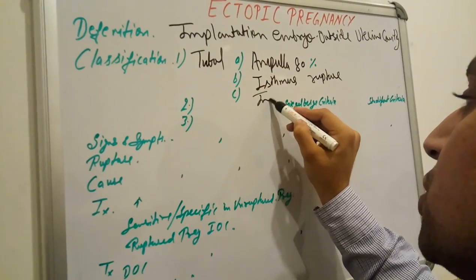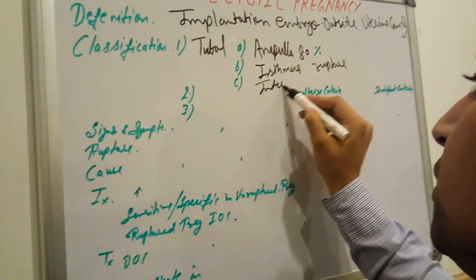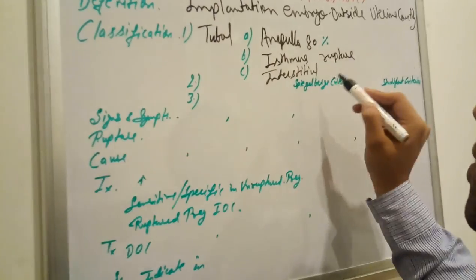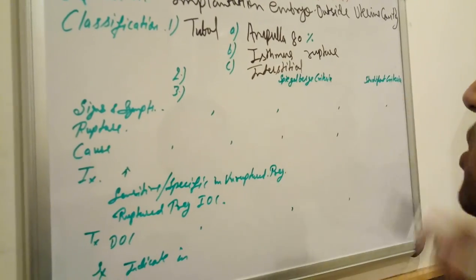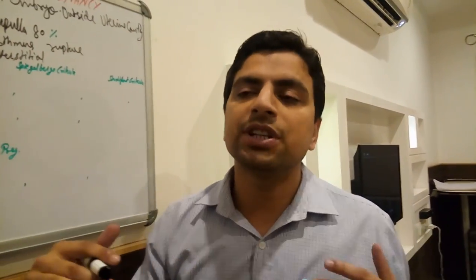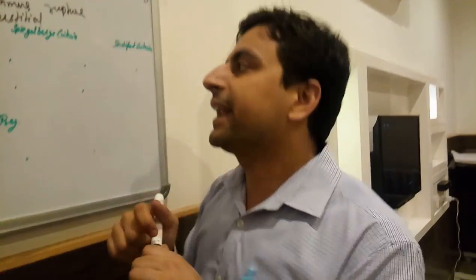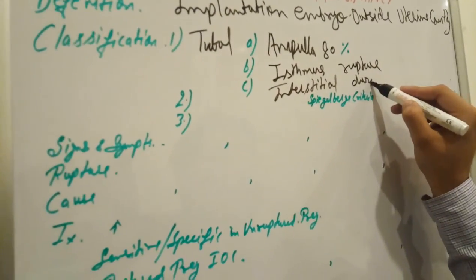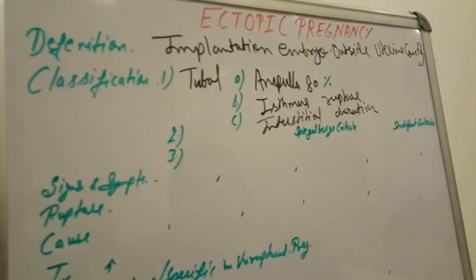Then there is the interstitial site. The interstitial ectopic pregnancy has the maximum duration of pregnancy — meaning it can persist longest before complications compared to other tubal sites.